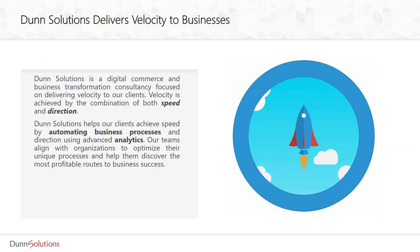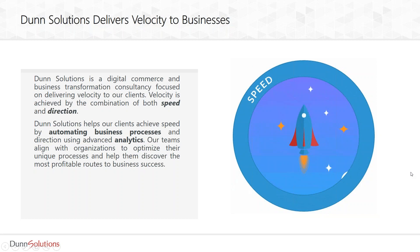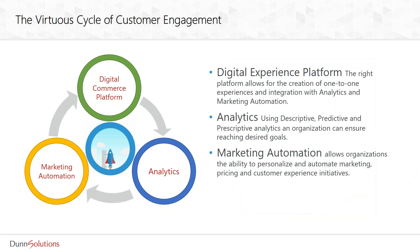Our mission is to deliver Velocity to our clients. If you think back to your Physics 101, you'll remember that Velocity is a combination of speed and direction. We provide you with direction using our advanced analytics offerings and with speed by helping you automate your business processes. Our expertise starts with helping you devise or consult with your digital commerce platform, then we provide direction through advanced analytics and speed through marketing automations — and that closes the loop, which we refer to as the virtual cycle of customer engagement.